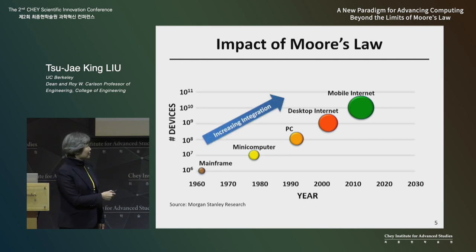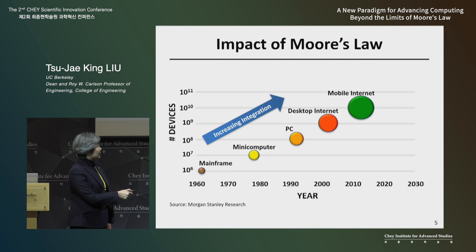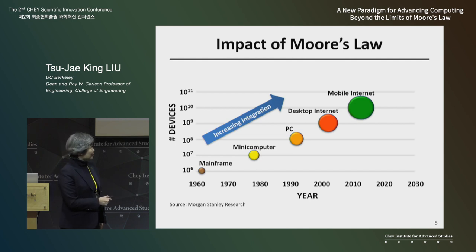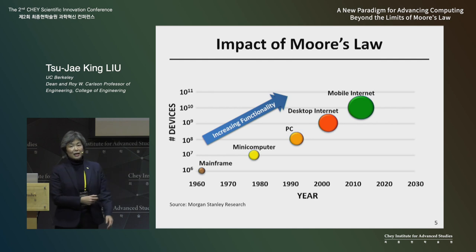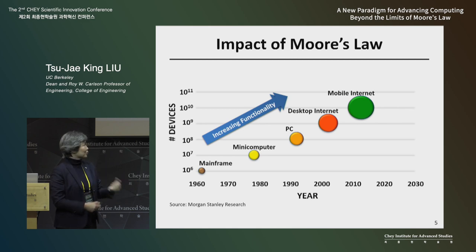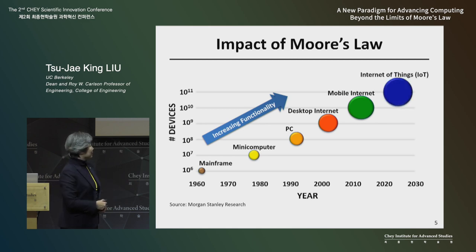Today we have smartphones that are mobile and connected to the internet. Due to the steady increase in the number of devices we can fit on a chip and the improved functionality, it opens up new markets. And the size of these dots is increasing because the functionality of our smartphones today is much greater than even the mainframe computers in the past.